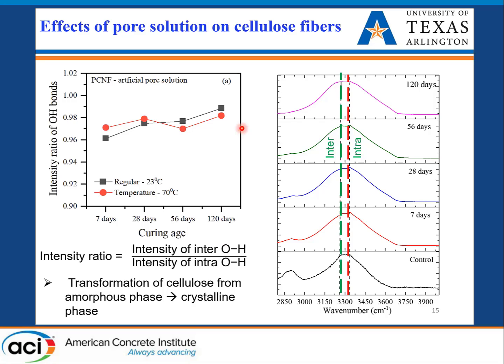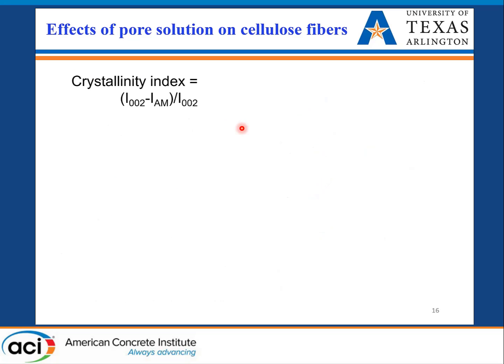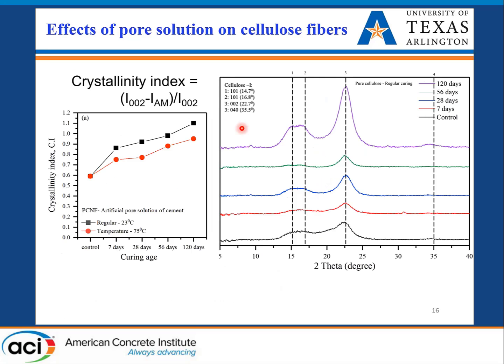XRD monitoring showed that cellulose is becoming more crystalline over time. Cellulose nanofiber has both an amorphous portion and a crystalline portion; due to alkaline degradation, the amorphous part was breaking down and crystallinity was increasing. The question then became: how does this degradation affect our pore solution or cement paste?